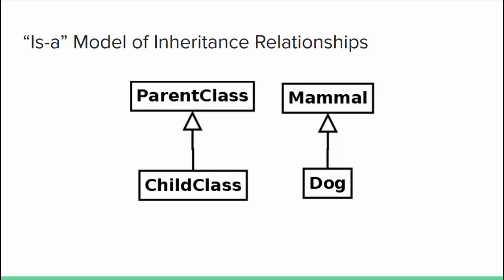When designing or communicating designs for multi-class programs, it's helpful to draw simplified models that show your class relationships. The most common way is through UML diagrams. In UML diagrams, classes are represented in rectangles with one to three sections — at the very least you'll see the class name in a bold font. Related classes are connected by lines with different symbols indicating different kinds of relationships. Inheritance relationships are arrows that point from the child class to the parent class, and we read them as 'is-a' — so child class is a parent class, or dog is a mammal.